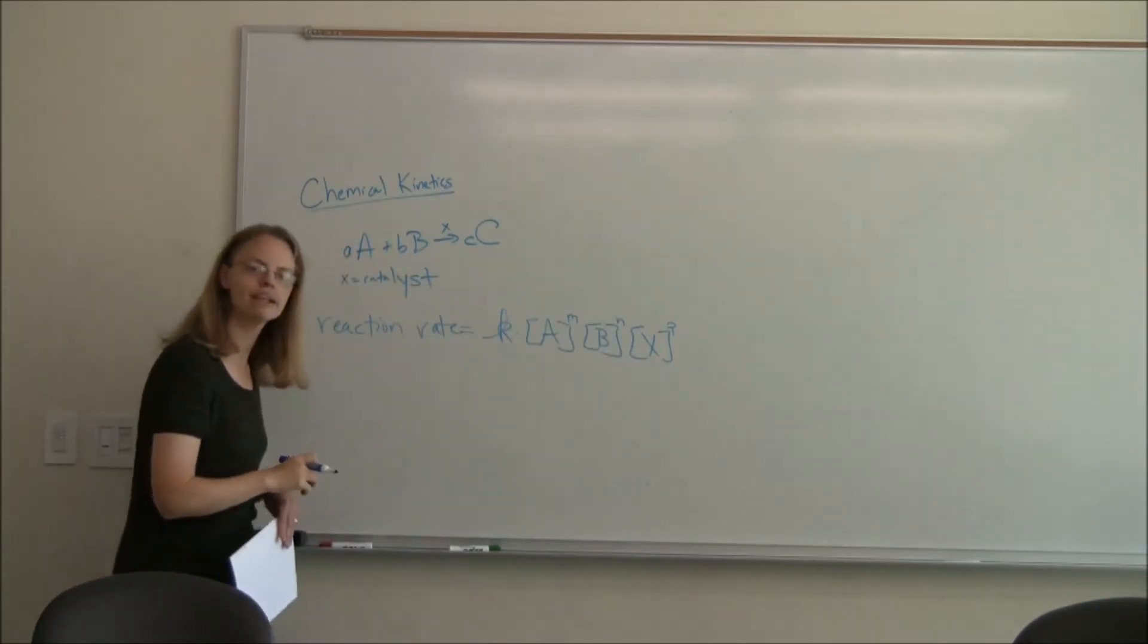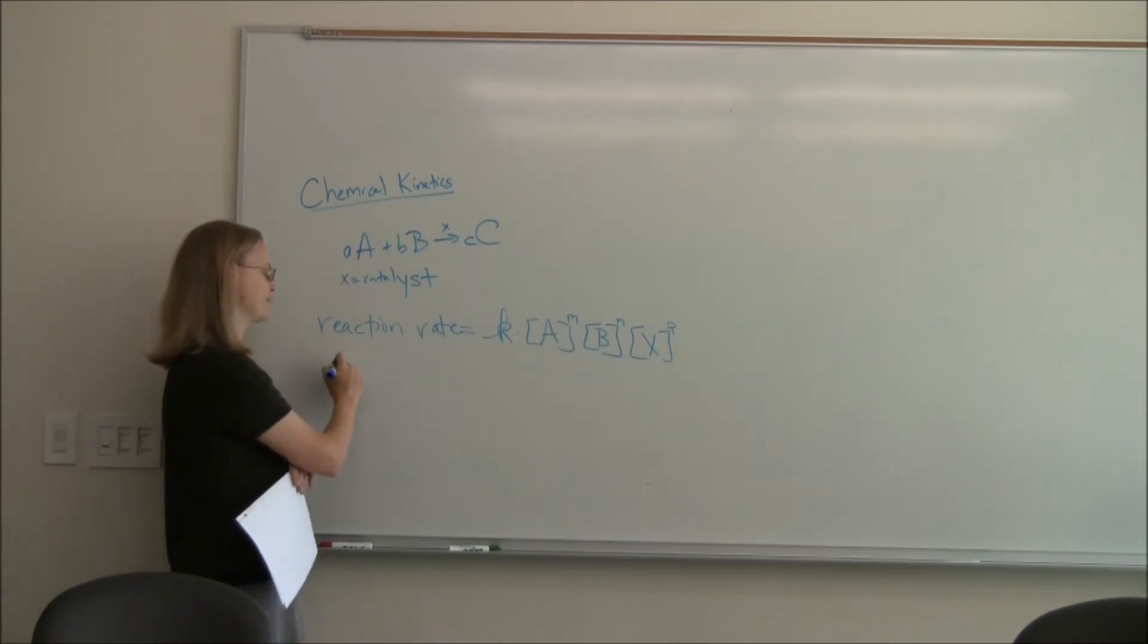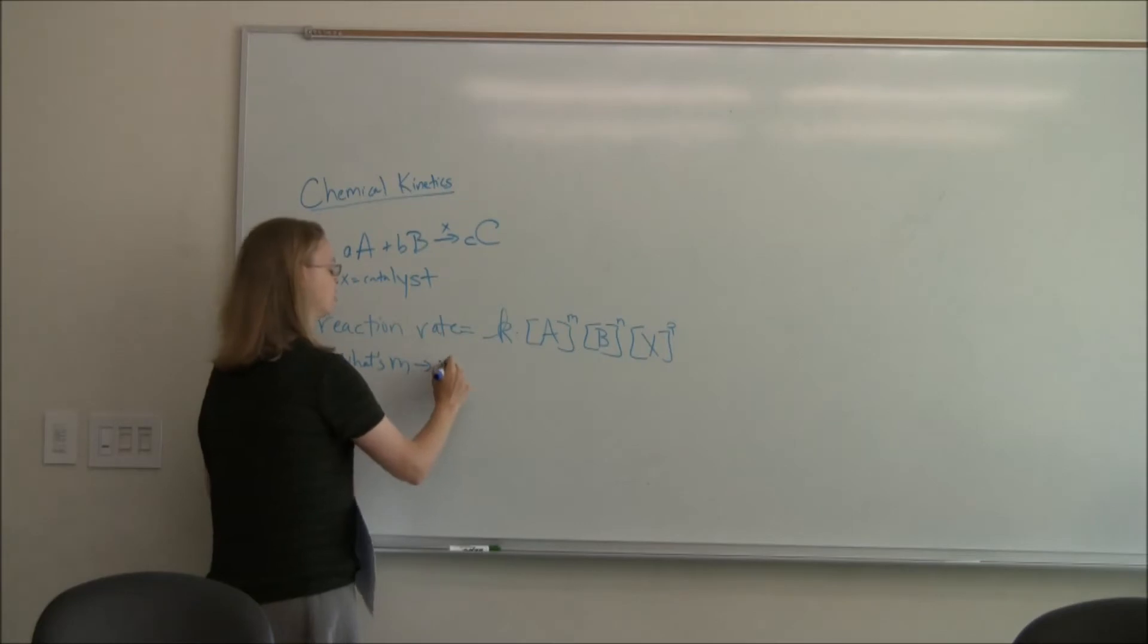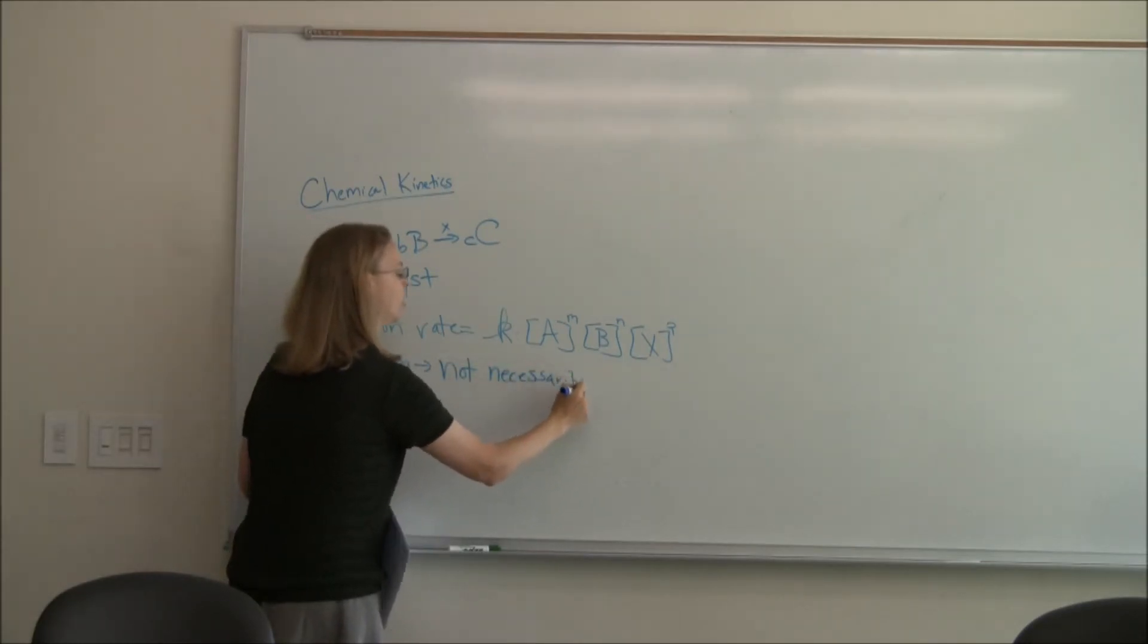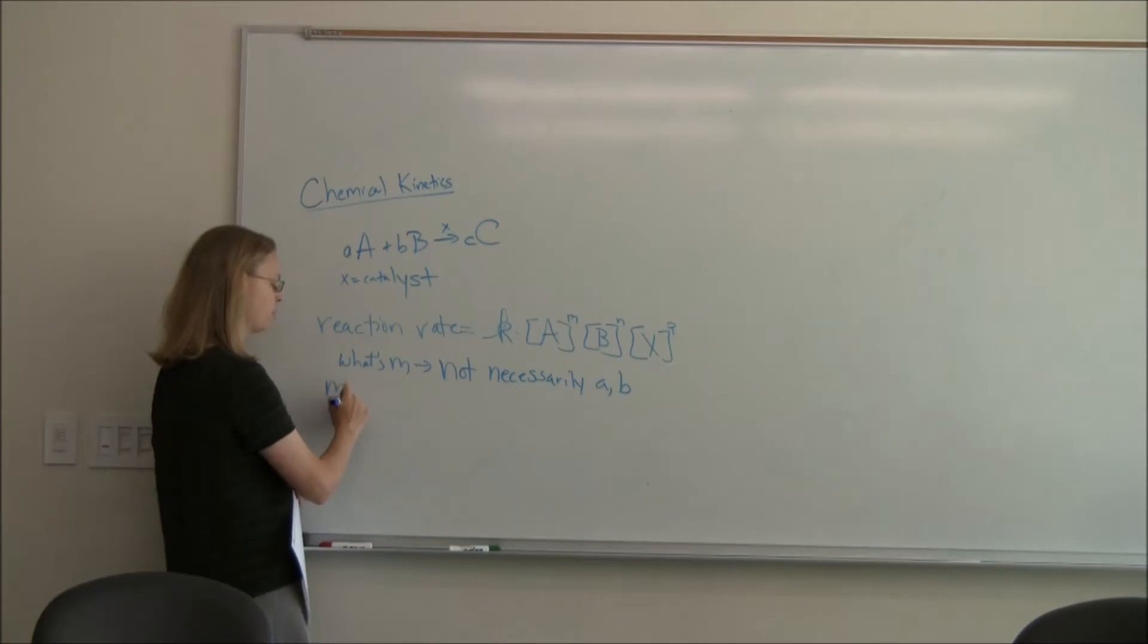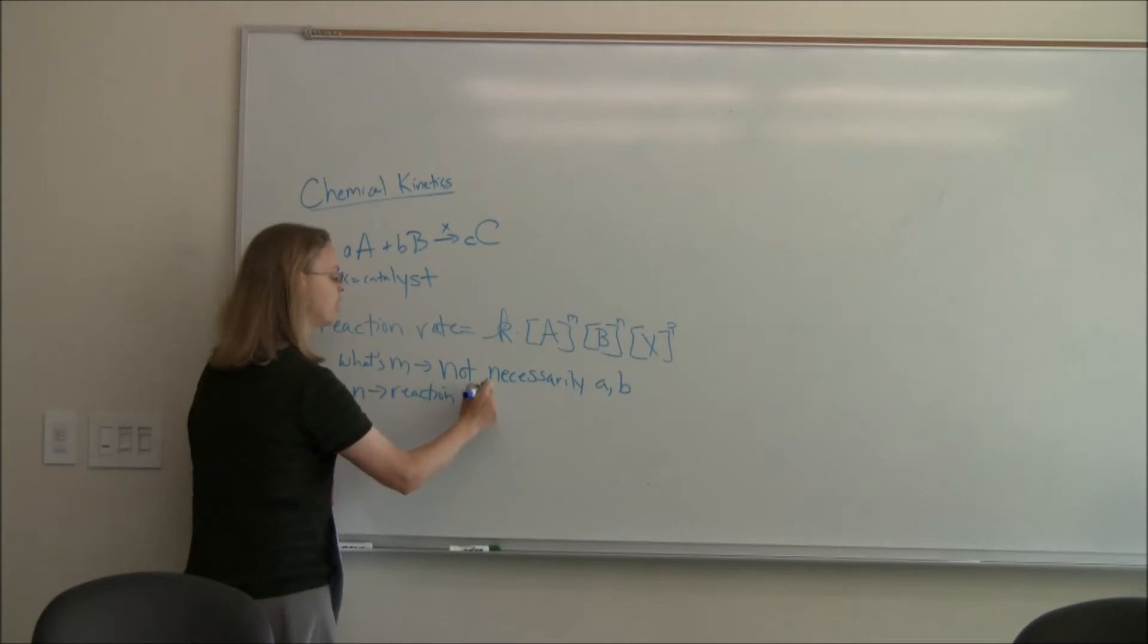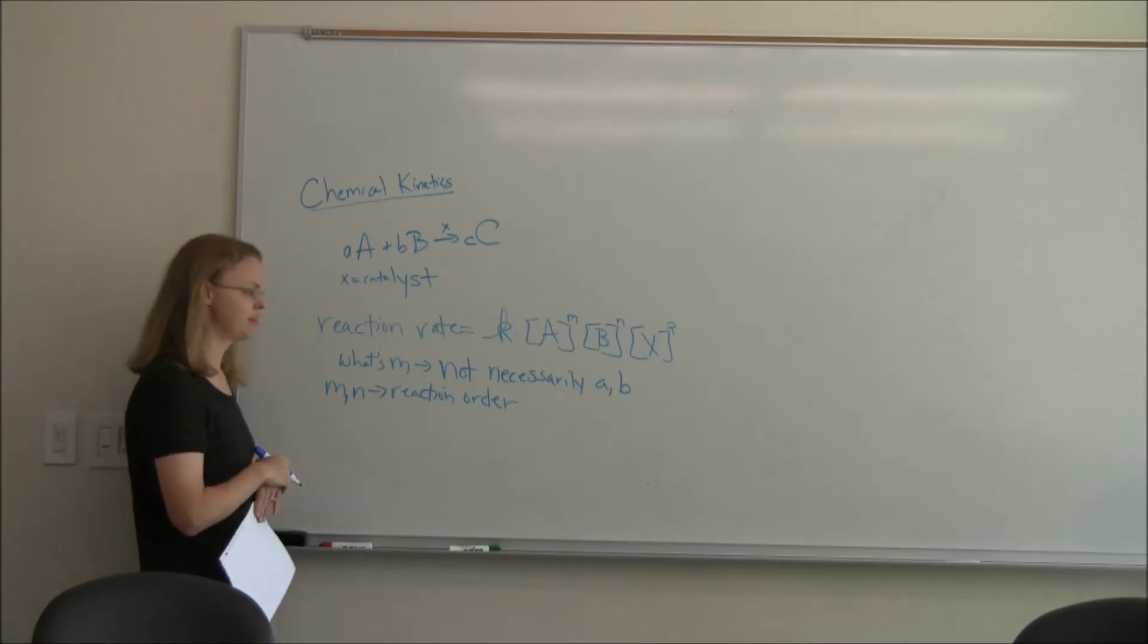We're not going to talk too much about catalytic reactions, quite frankly, in this class, but I wanted to put them in there in the initial thing. So what's M or N? The answer that is wrong, it is not necessarily A and B. It could be, but you're so used to writing equilibrium equations that people are like, oh, I know what that is. M and N are what's called the reaction orders.